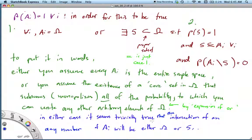But in either case, it seems trivially true that the intersection of any number of these Ai's will be either Ω in the first case or S in the second case. That's how you've constructed the sets around this core subset that has probability 1, and then you're just adding things to it.